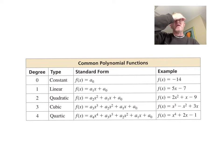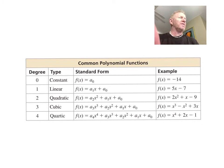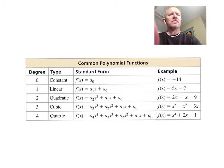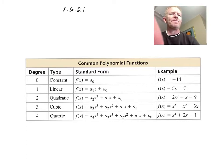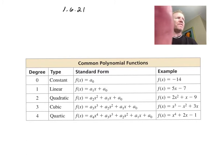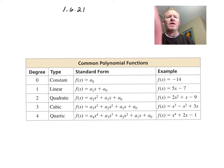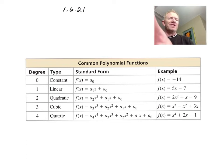All right, this is from Wednesday, January 6th — section 4.2. The first thing you need to know in this section is the names of the different types of polynomial functions and how we define what a degree is.